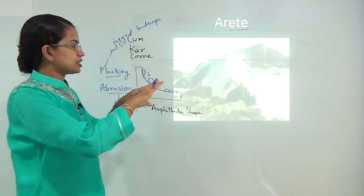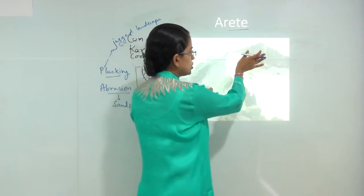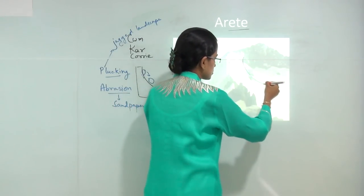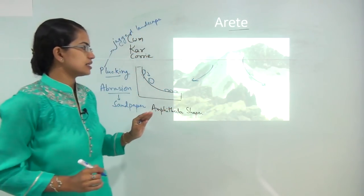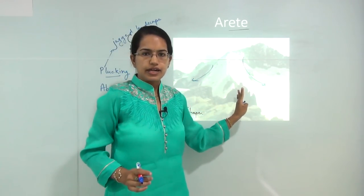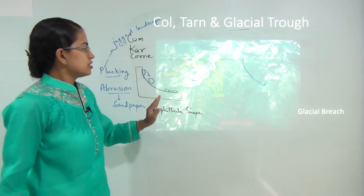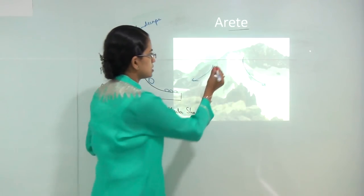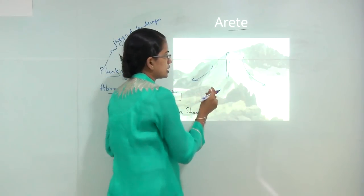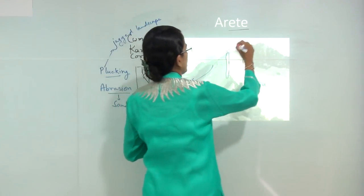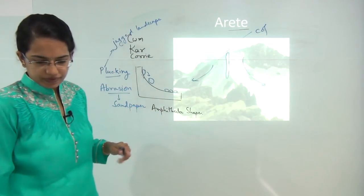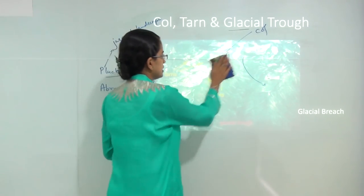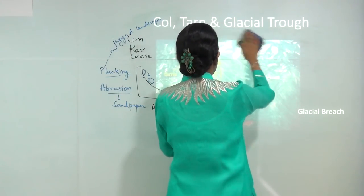An arête formation occurs when you have two cirques going in different directions — one cirque going this way and another going in the opposite direction. This formation is known as an arête. The center portion or the intersection of the two cirques is known as a col, which is formed by the recession process at the intersection of the two arêtes.